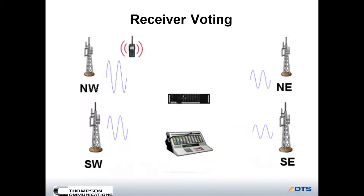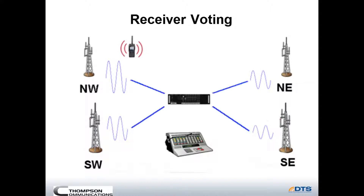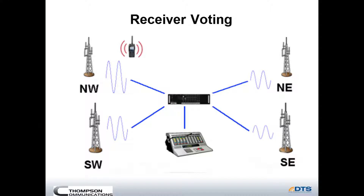Receiver voting uses receivers at multiple sites to pass audio to a single site. In this example, the portable radio is much closer to the tower in the northwest quadrant, so it's going to have the best signal strength. All the sites send their audio back to a device called a voting comparator, which finds the best signal and passes that onto the console and transmitter, or transmitters in a repeater system.